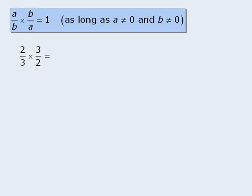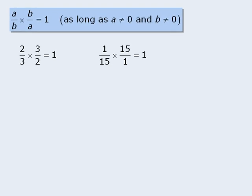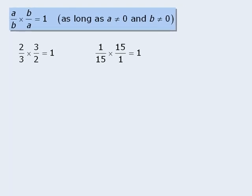So, 2 thirds times its reciprocal, 3 halves, equals 1. Similarly, 1 fifteenth times 15 over 1 is equal to 1. And 93 over 14 times 14 over 93 equals 1.